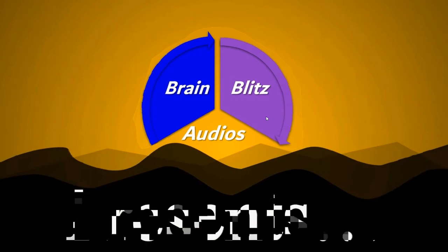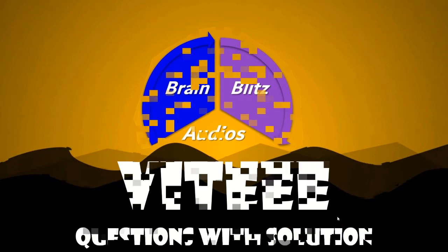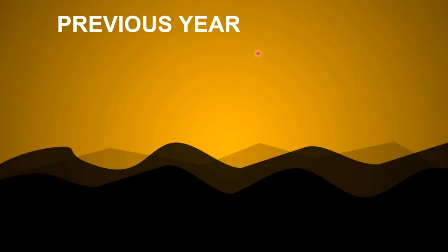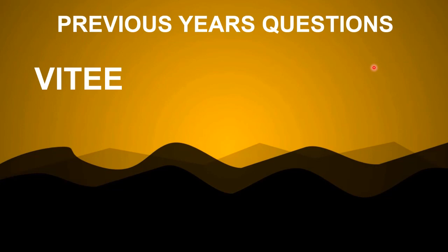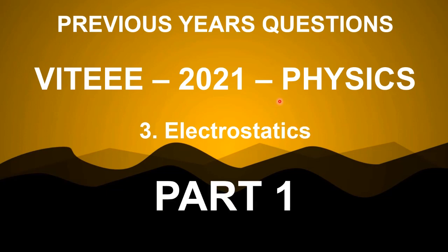Hello everyone. Welcome to Brain Blitz Audios. Today, in this episode of VITEEE Questions with Solution, we're going to be looking at some questions which were asked in physics in previous years of VITEEE. This will be helpful for your preparation for the exam scheduled in 2021. Today we're talking physics, and especially the chapter electrostatics — static electricity such as electric charges in fields, electrostatic potential, and capacitance. In accordance with suggestions from our viewers, we've decided to limit it to that subject only.